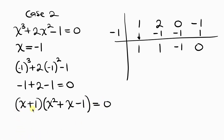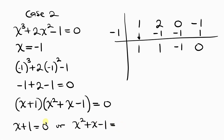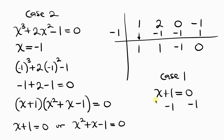Now we have two sub-cases: x plus 1 equals 0, or x squared plus x minus 1 equals 0. For the first sub-case, subtracting 1 from both sides gives x equals negative 1. So that's another root of x — though we tried it before — but we don't know if it's the correct answer since we have conditions to follow.